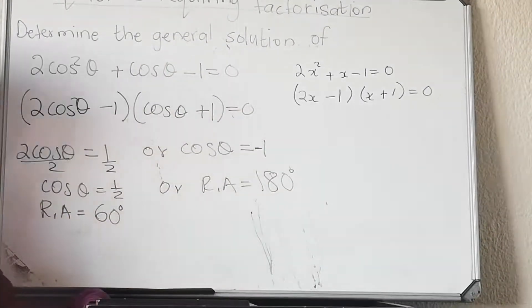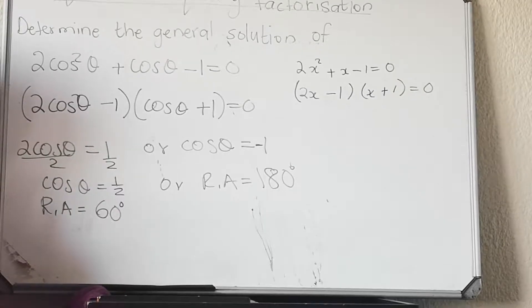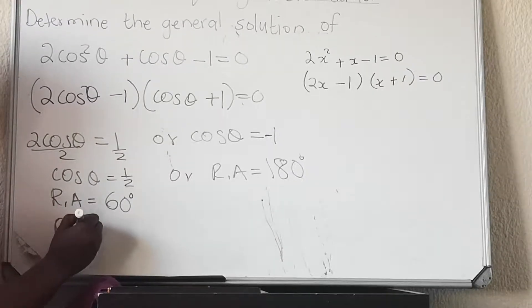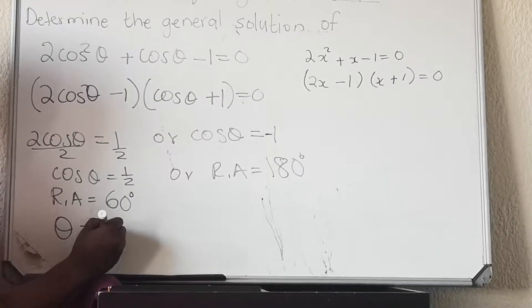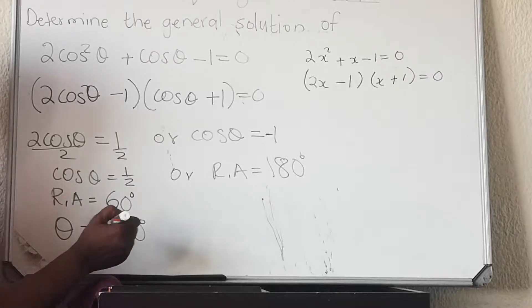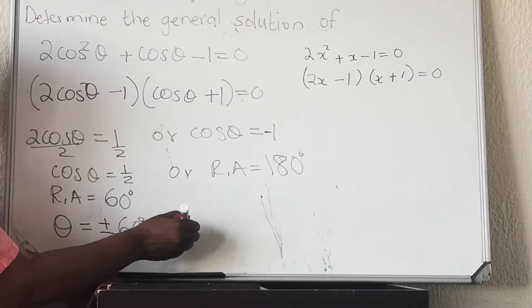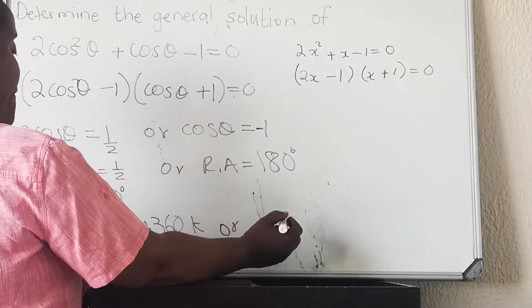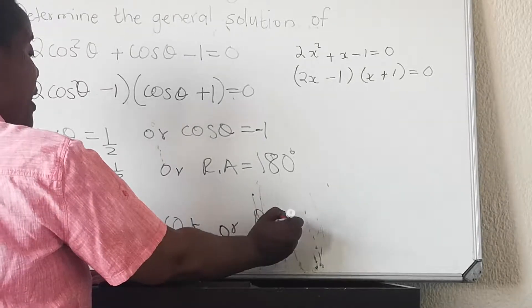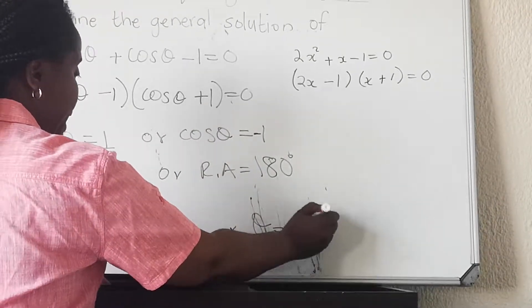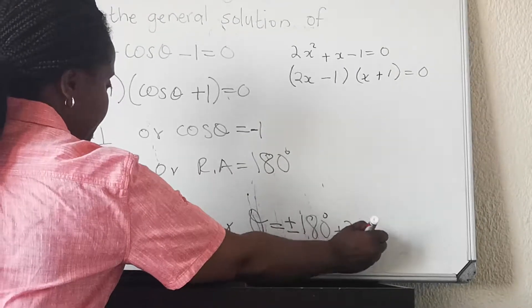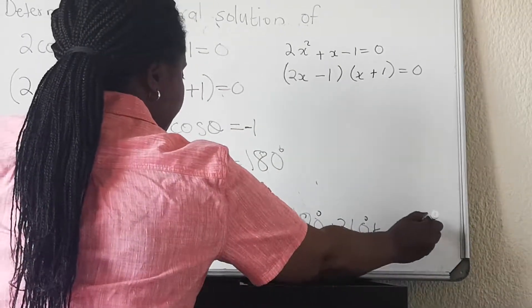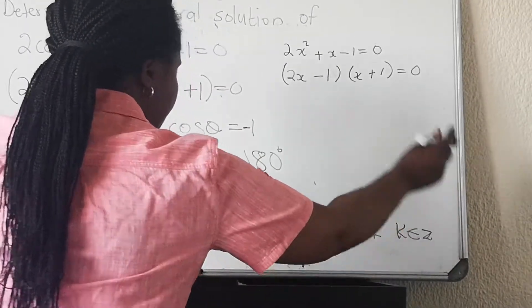Then you write your general solution. With cos I have two solutions: plus and minus reference angle. So my θ will equal ±60° + 360k, or I'll have θ equal to ±180° + 360k, and then you have to add that k is an element of integers.